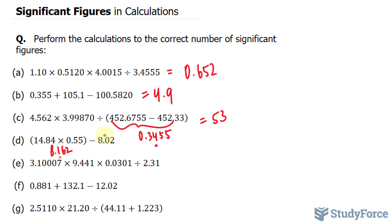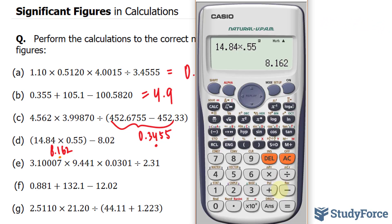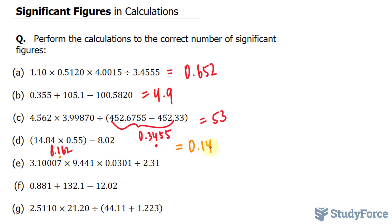And when I subtract this number from 8.02, we should have two numbers after the decimal. So taking this number and subtracting 8.02, we get 0.142. Stop writing after the four. 0.14.